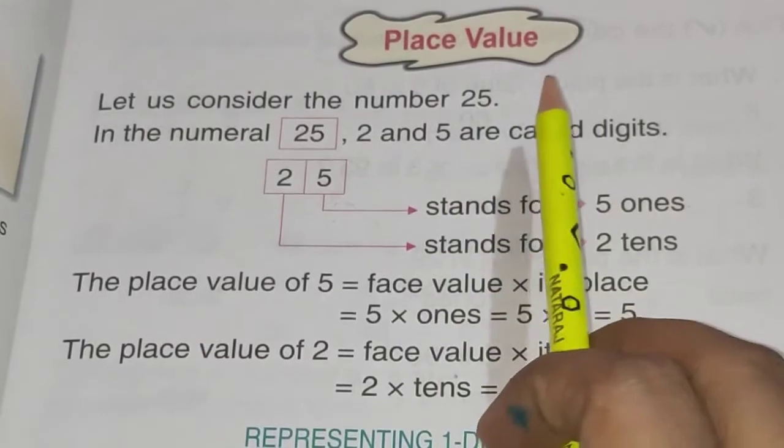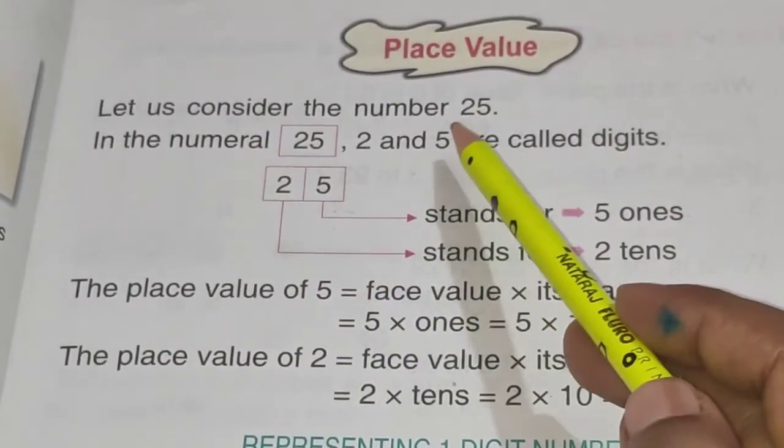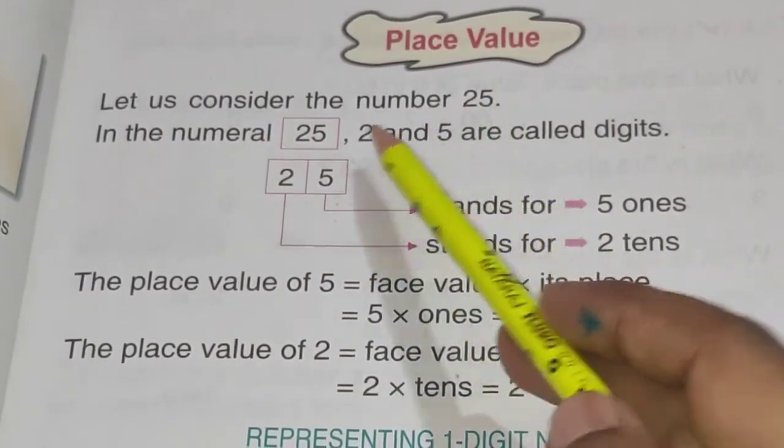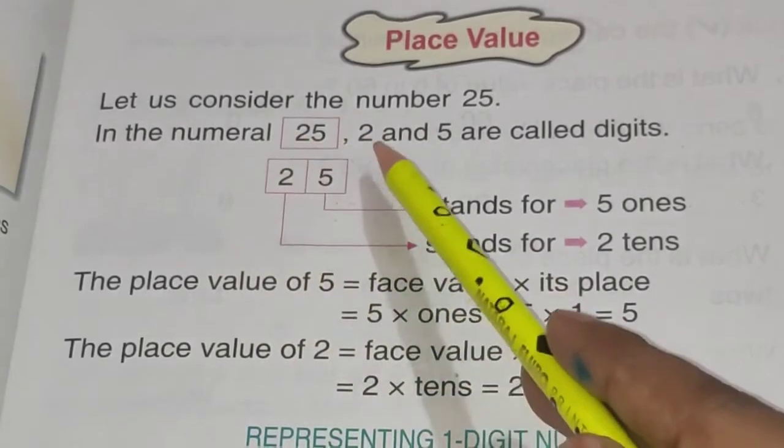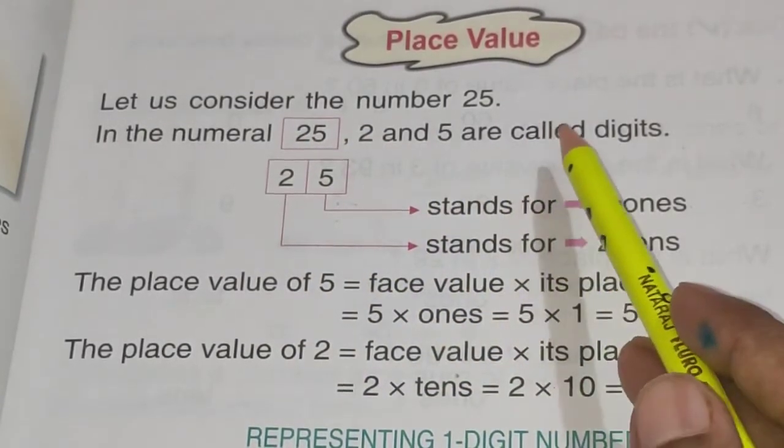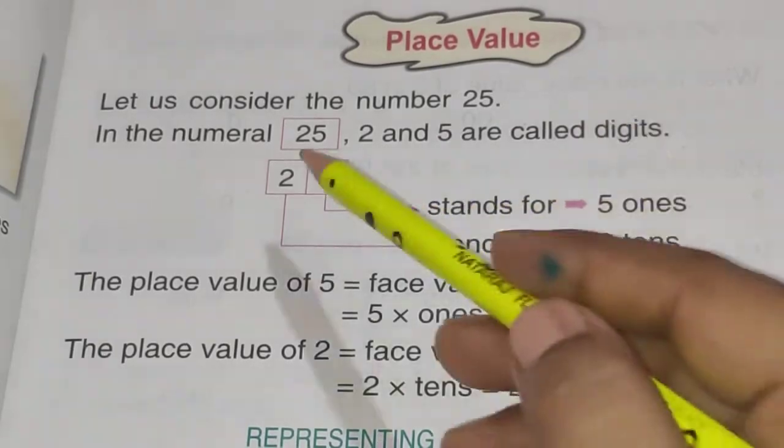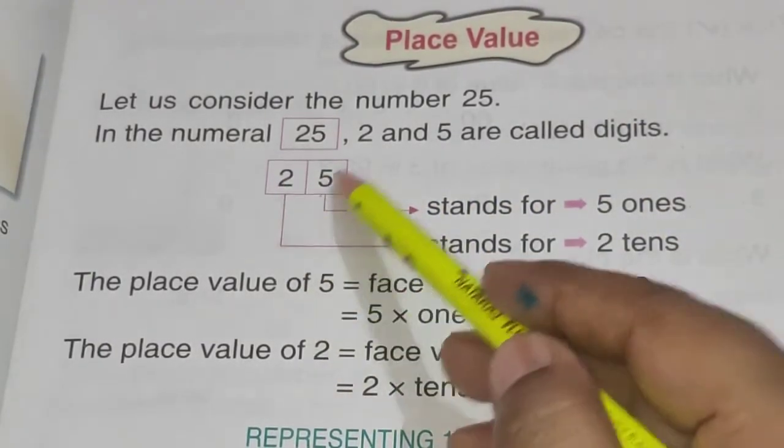So let's see with some examples. Here we have taken a number that is 25. In the numeral 25, 2 and 5 are called digits. 2 aur 5 kya hai? Digits hai. So this 2 and this 5, these are digits.